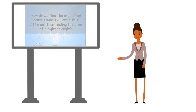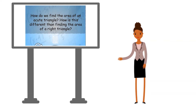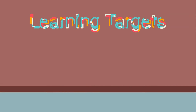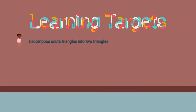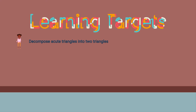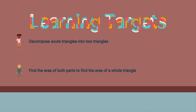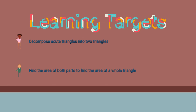Here's our big question for today: how do we find the area of an acute triangle, and how is this different than finding the area of a right triangle? Here are our learning targets for today, math marvels. Math marvels will decompose acute triangles into two triangles and find the area of both parts to find the area of a whole triangle.